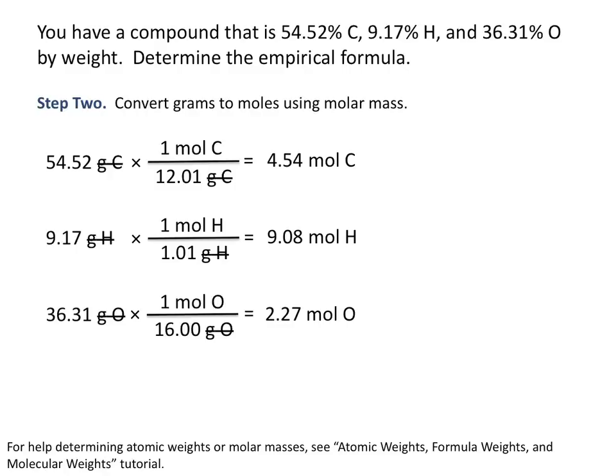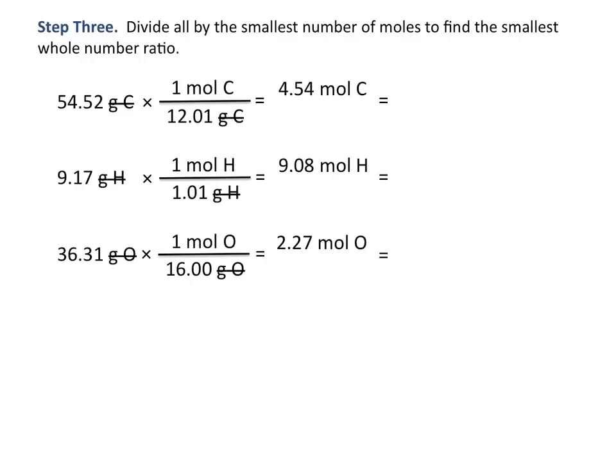We can't stop here because you can't write a formula with subscripts of 4.54 for carbon, 9.08 for hydrogen, and 2.27 for oxygen. You need subscripts that are whole numbers. To do that, we divide all of our moles by the smallest number of moles to get our smallest whole number ratio.